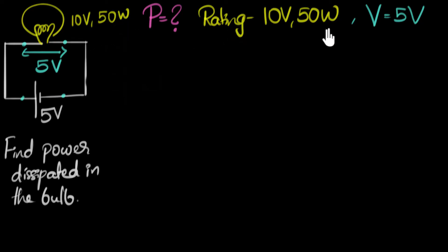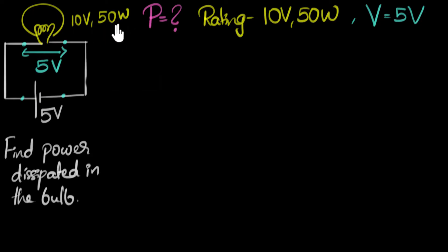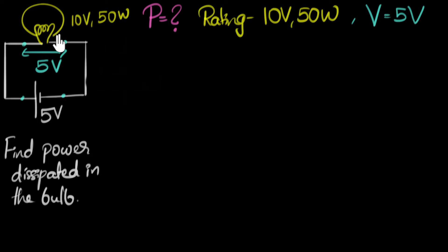We need to understand the meaning of the rating. Whenever a rating is mentioned like this, it tells us that if the voltage across the bulb was 10 volts, then the power dissipated in that bulb would have been 50 watts. That's what the rating of any device always means — for this much voltage across that device, the power dissipated would be 50 watts. But clearly in this example, the voltage across the bulb is not 10 volts, it's five volts. So the power dissipated won't be 50 watts; we can guess it's going to be lower than that, and that's exactly what we need to calculate.